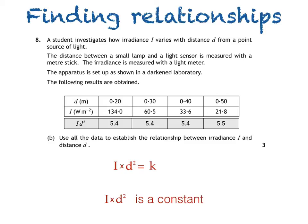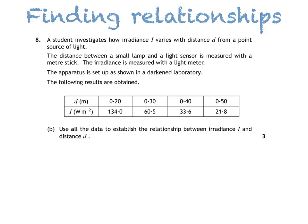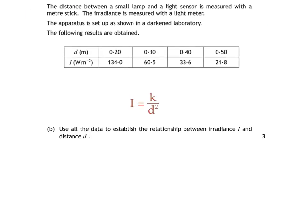Here's another way of answering the same question. We'll start with the same equation. I is equal to k divided by d squared, which can also be written as I is equal to k times 1 over d squared. I is a constant times 1 over d squared. This means that irradiance I is directly proportional to 1 over distance squared. We can use this to plot a graph of I against 1 over d squared, but we obviously need to calculate 1 over d squared first.